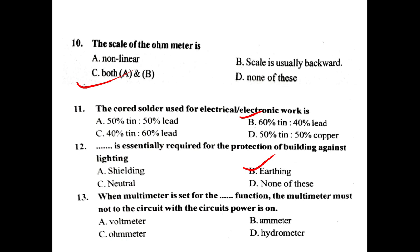When the multimeter is set for the dash function, it must not be connected to the circuit while the circuit's power is on. Answer: When the multimeter is set for the ohm function, it must not be connected to the circuit with the circuit power on at the same time.